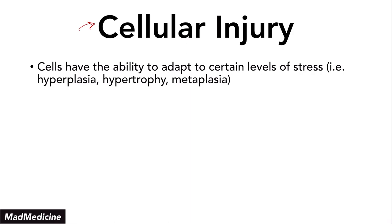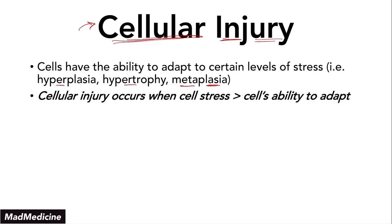Cells have the ability to handle a lot of stress, and they've created these mechanisms to be able to handle the stress. These mechanisms include hyperplasia, hypertrophy, and even metaplasia. These are abilities our cells have developed over a long period of time to handle stress so we don't essentially kill ourselves off. But that stress is a limited amount that our cells can handle.